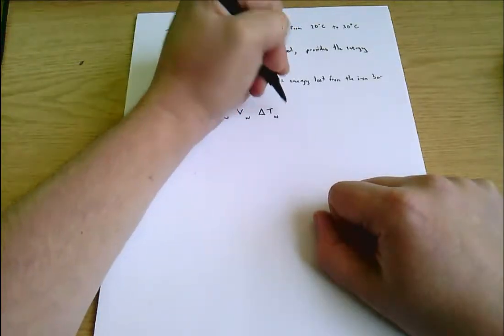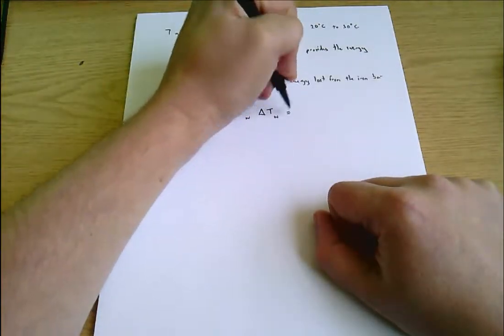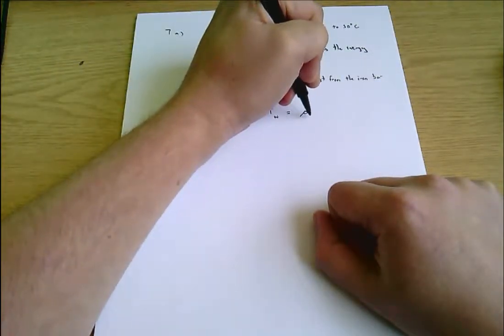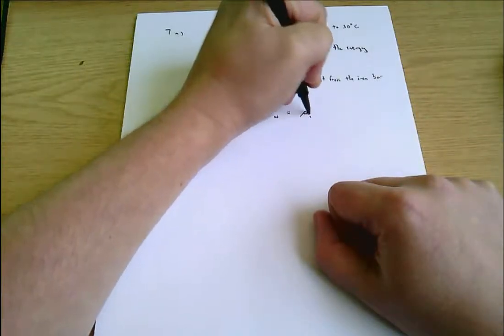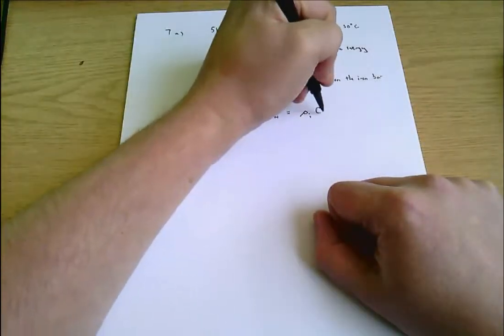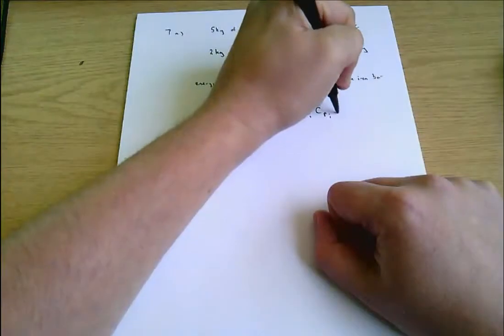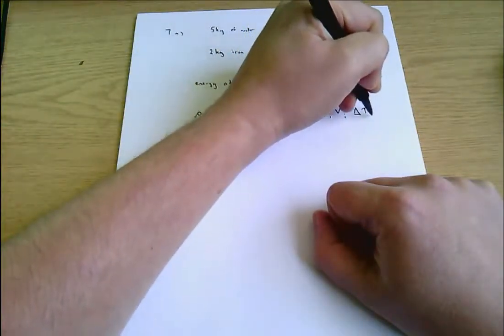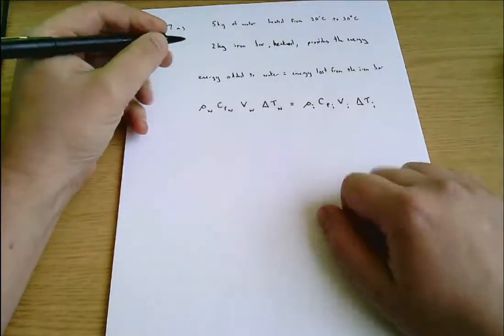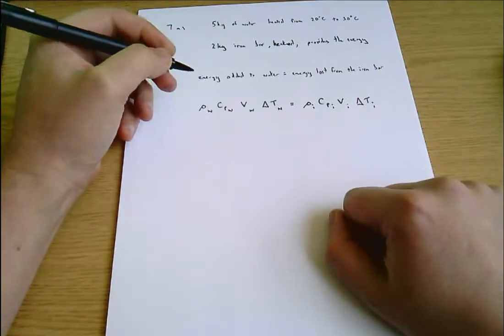This is a conservation of energy problem. However much the bar cools down, it's losing energy and that energy is going into the water. The energy added into the water is rho water, Cp water, V water, delta T water. And the energy lost from the bar is rho iron, Cp iron, V iron, delta T iron.